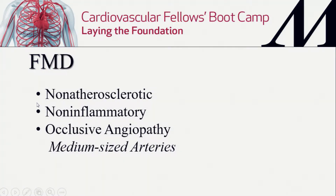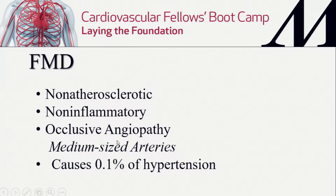Most things involving most blood vessels are not going to be in this category. FMD tends to affect medium-sized vessels and can affect almost any blood vessel, but we're going to talk about the two most common, one of which falls in the renal category. It causes only 0.1% of hypertension — 90% of hypertension is called essential, and FMD is relatively uncommon within that remaining 10%.